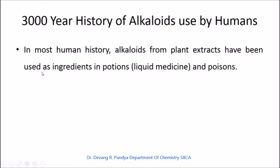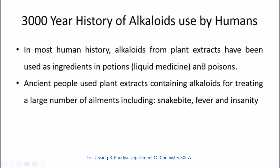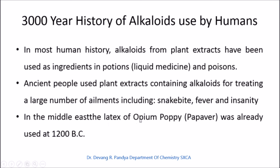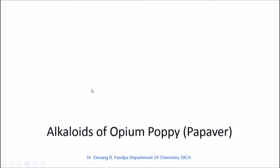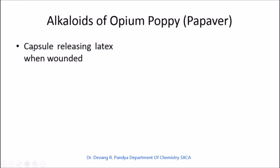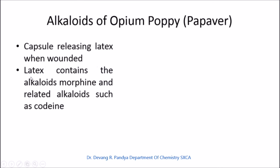Ancient people used plant extracts containing alkaloids for treating a large number of ailments including snake bites, fever, and insanity. In the Middle East, latex of the opium poppy, Papaver somniferum, was already used as early as 1200 BC. The latex from cut opium poppy capsules contains the alkaloid morphine and related alkaloids such as codeine.